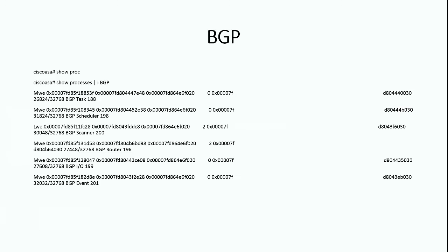This concludes the configuration of eBGP and iBGP on ASA. To verify, use 'show bgp neighbors' — for iBGP it shows 'internal link', for eBGP it shows 'external link'. The neighbor address is defined under address-family, not directly under router BGP. You go under router BGP, then down another level to address-family IPv4 unicast, and then define the neighbor address and its AS number. I hope this slide on BGP was informative and beneficial. Thank you.